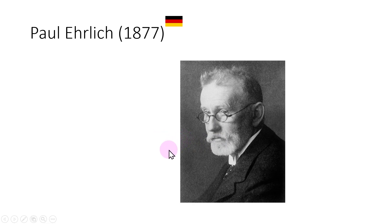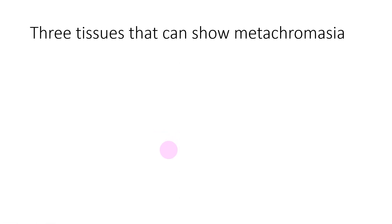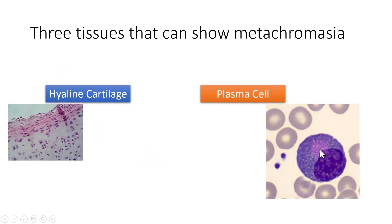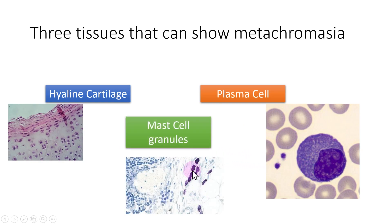Now let us see three normal tissues that can show metachromasia. One is the hyaline cartilage, the next is the plasma cell, and the next is mast cell granules.